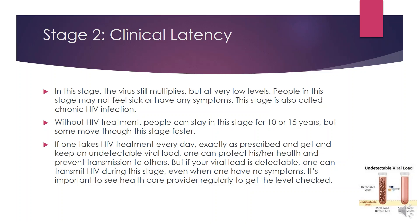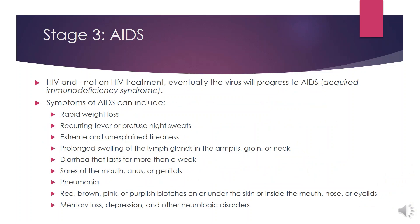Therefore, it is important to see a healthcare provider, get oneself checked, and take treatment so that the viral load stays undetectable and is not transmitted to others. Stage three is known as AIDS — acquired immunodeficiency syndrome. If an individual has HIV and is not on HIV treatment, eventually the virus will weaken the body's immune system and one will progress to AIDS.